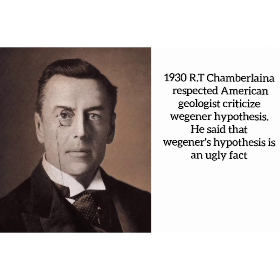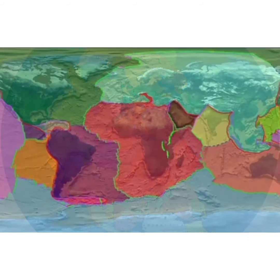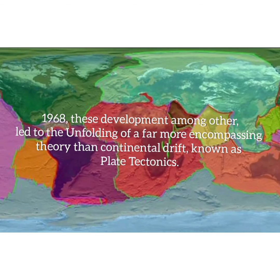In 1930, Artie Chamberlain, a respected American geologist, criticized Wegener's hypothesis, calling it an 'ugly fact.' Although Wegener's hypothesis of continental drift was largely correct, it contained some incorrect data. In 1968, these developments, among others, led to the unfolding of a far more encompassing theory than continental drift, known as plate tectonics.